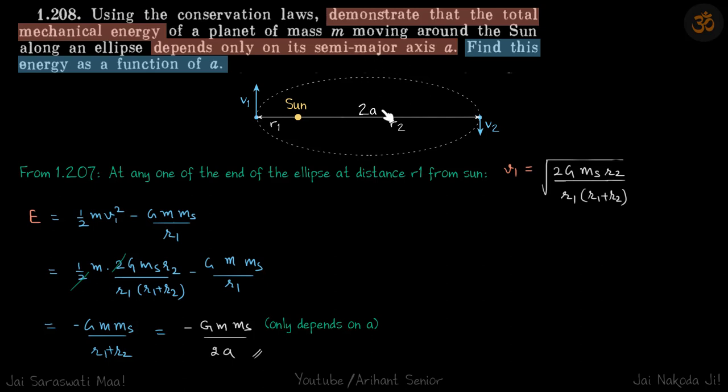So if the semi-major axis is a, then the whole length of this is 2a. Now we need to find mechanical energy, so that will be kinetic energy plus potential energy.